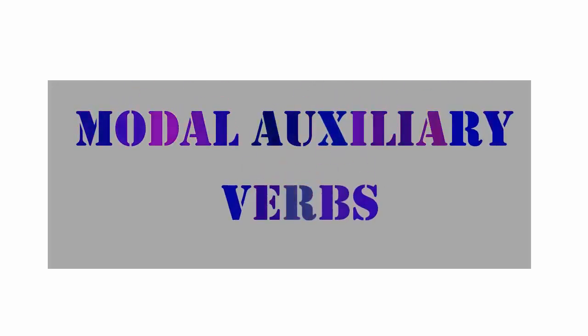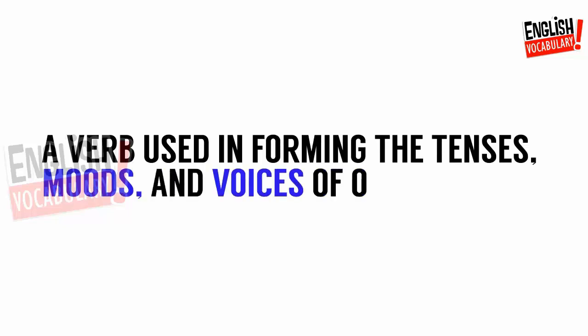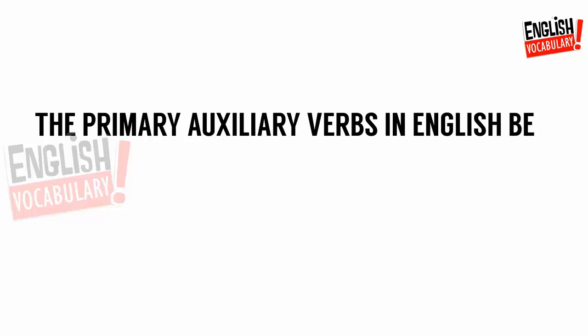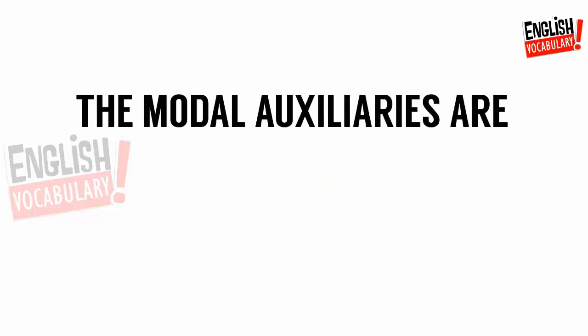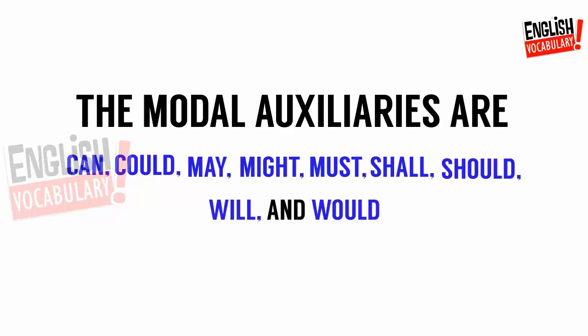Modal auxiliary verbs: a verb used in forming the tenses, moods, and voices of other verbs. The primary auxiliary verbs in English are be, do, and have. The modal auxiliaries are can, could, may, might, must, shall, should, will, and